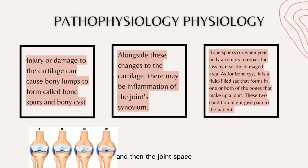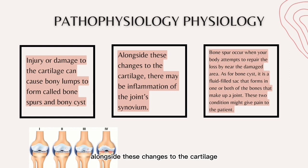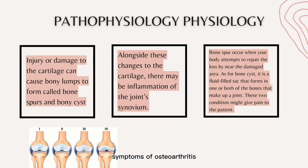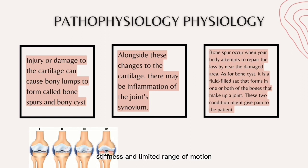The joint space is progressively lost over time. Alongside these changes to the cartilage, there may be inflammation of the joint synovium. These changes can occur gradually, and people may slowly start to experience symptoms of osteoarthritis such as pain, stiffness and limited range of motion.